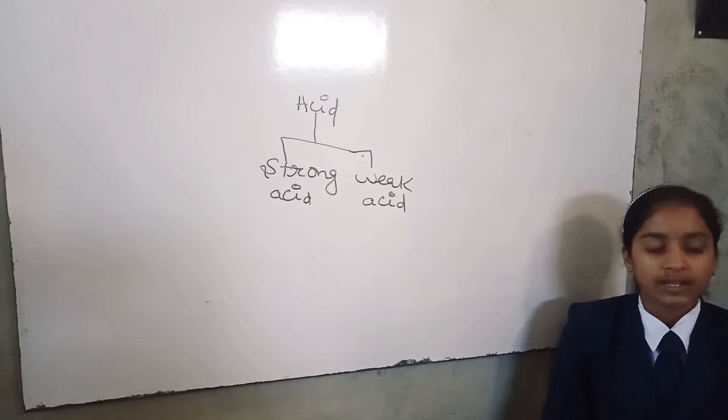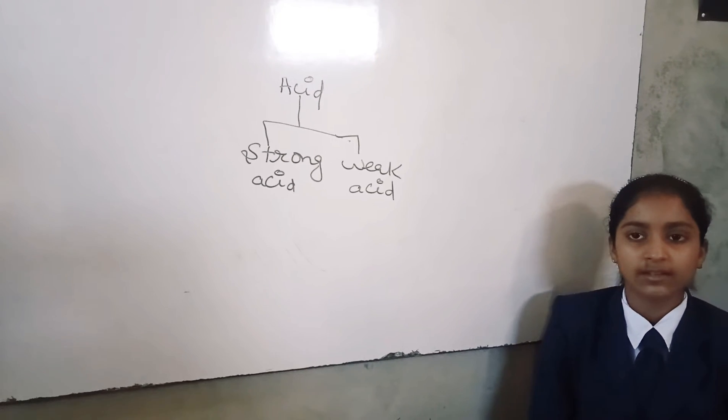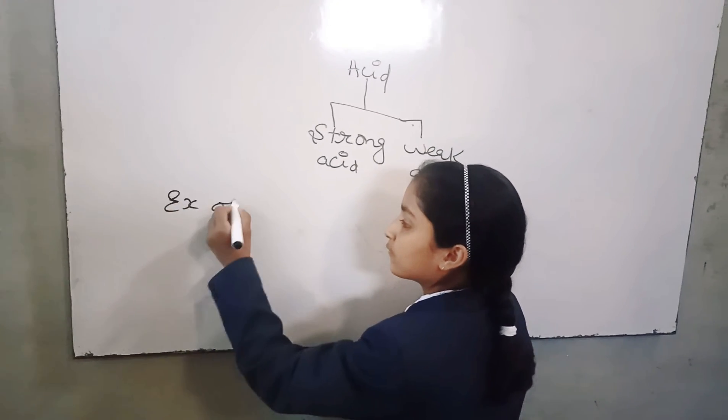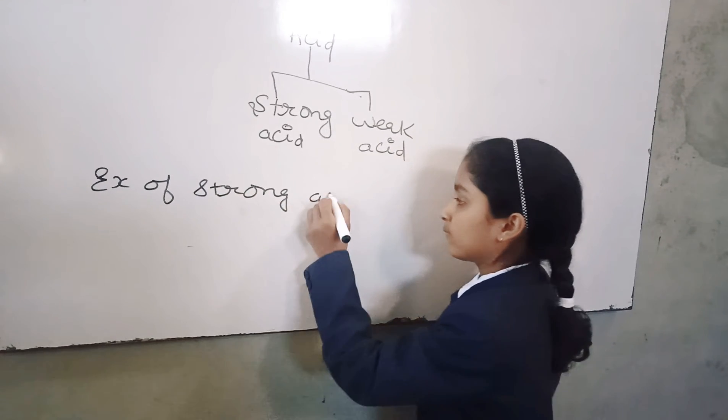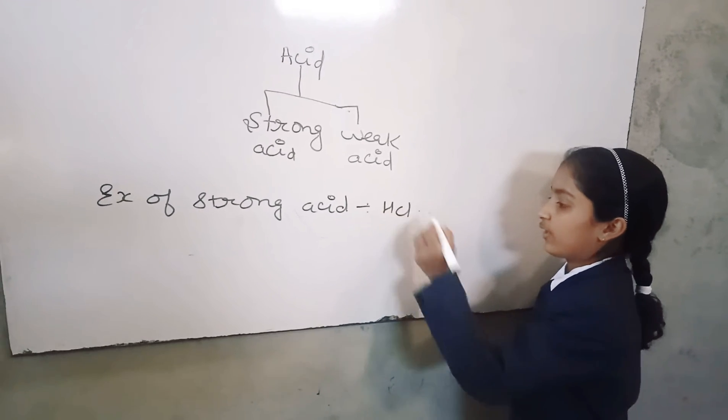So what is strong acid? The acid which completely dissociate in water are known as strong acid. For example, HCl, hydrochloric acid.